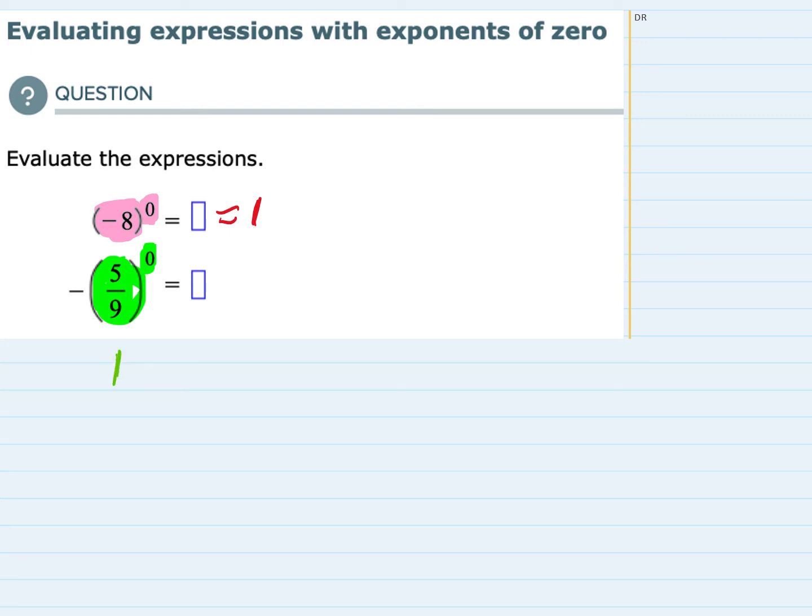However, this negative, unlike the first example, is outside the parentheses. So it's not being raised to the 0 power, only the 5 ninths is being raised to the 0 power. And that 5 ninths raised to the 0 power does become 1, but this negative is still outside. So our answer for the second expression here is a negative 1.